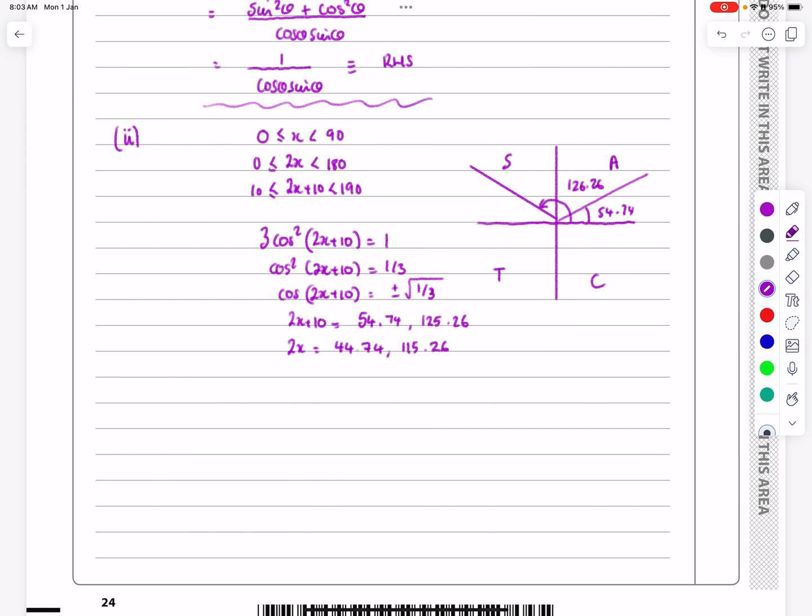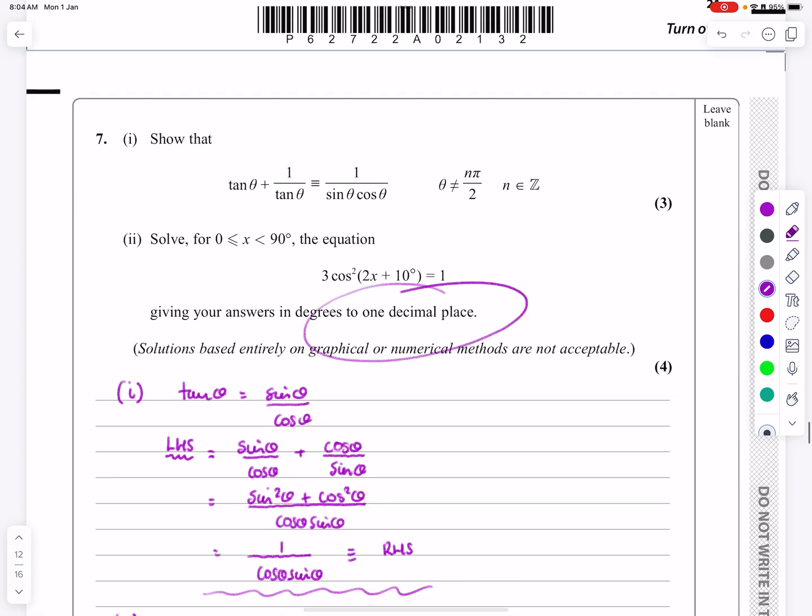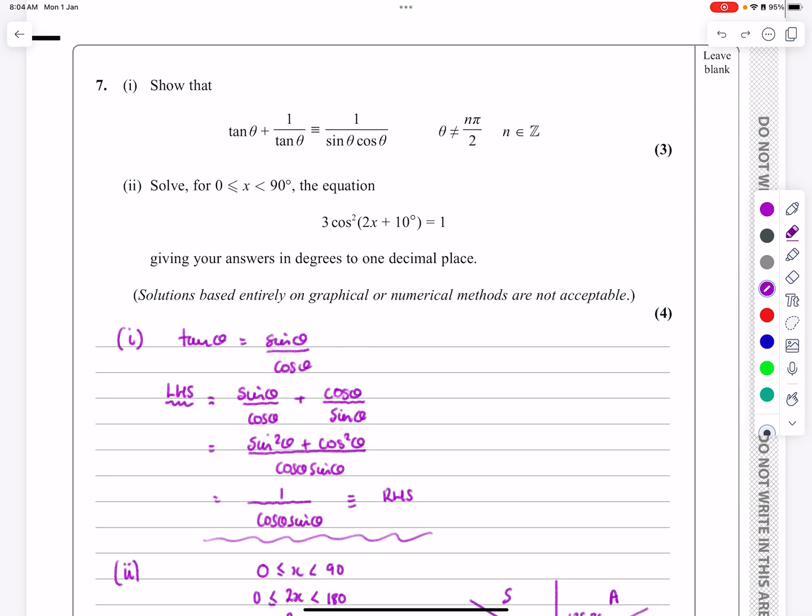So x is going to be half of those values. It works out to be 22.4, or it works out to be 57.6. And both of those are, as it asked, to one decimal place. Hopefully that's a fairly straightforward question, it makes sense.